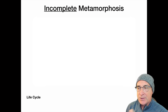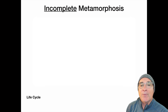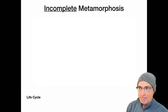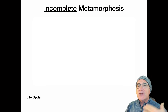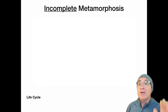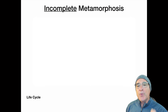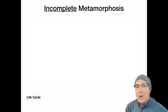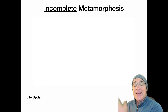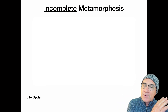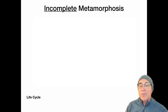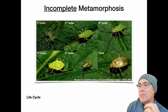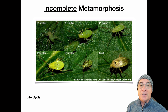The life cycle of true bugs is what we call incomplete metamorphosis. Compared to complete metamorphosis — like a moth or butterfly — a larva hatches, eats, grows, then forms a pupa, which transforms into the adult. It's a completely different look from when it hatches to when it becomes an adult: a complete change from a worm-like larva into a flying moth.